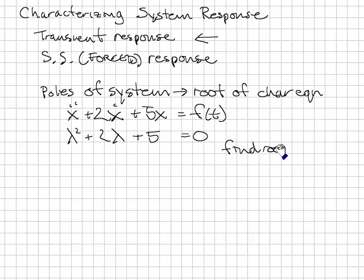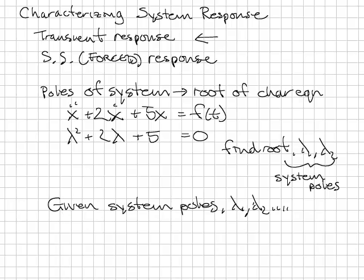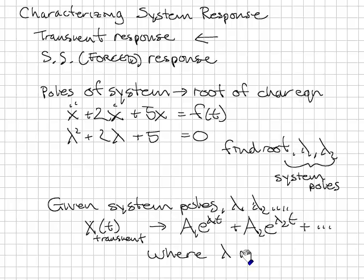Find roots, lambda 1, lambda 2. Those are the poles of the system. Given the poles of the system, we know that the transient response, x of t transient, will have the form a1 e to the lambda 1t plus a2 e to the lambda 2t plus and so on for lambdas. Where lambda may be complex,